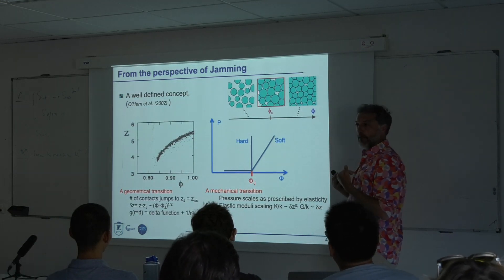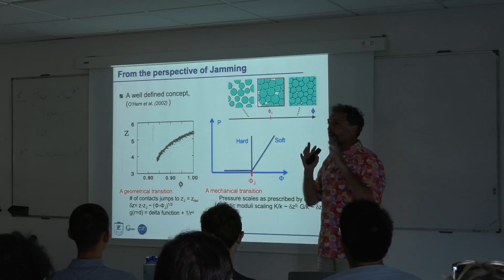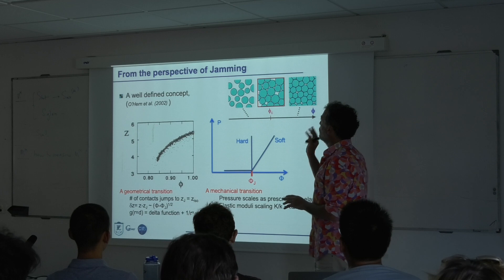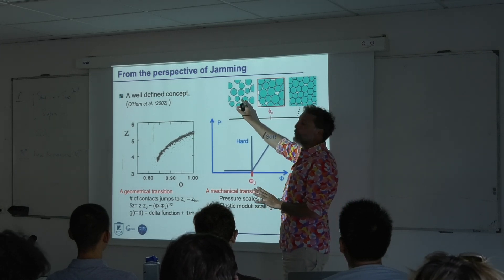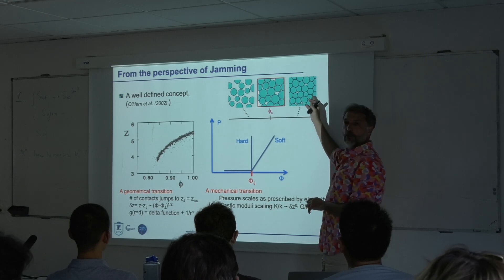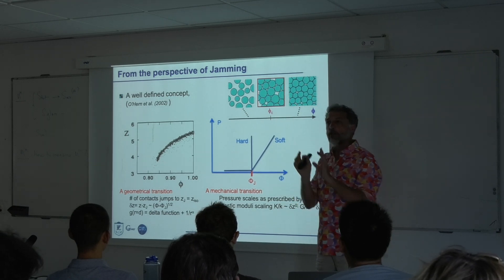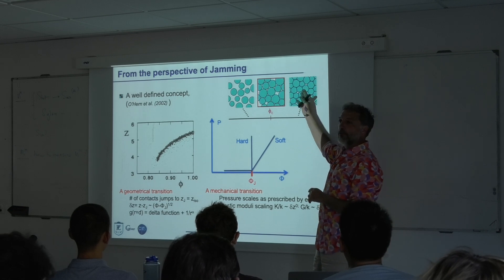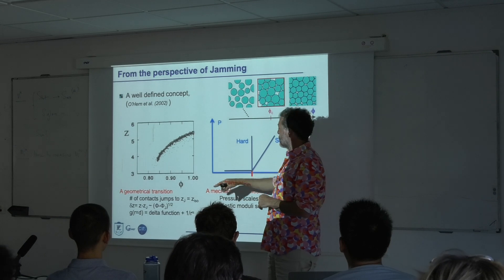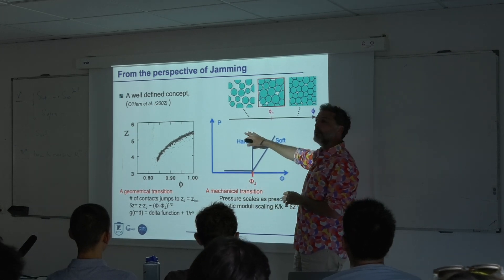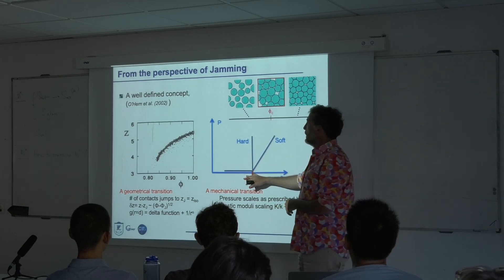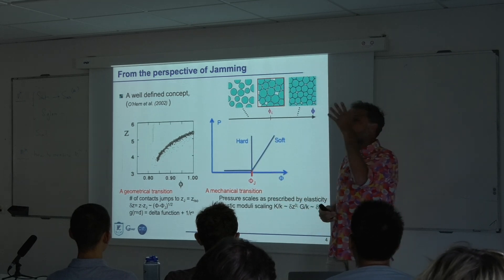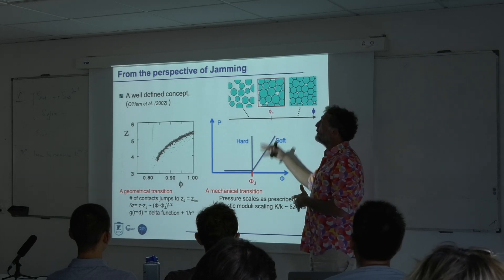From the point of view of jamming, it is a very well-defined concept. You consider a packing of spheres at zero temperature, no dynamics, and you wonder whether you can pack them or not given the packing fraction. At loose packing fraction there is no cost for overlapping particles. At high packing fraction there is a cost for overlapping. There is a packing fraction where you are just on the verge between these two regimes — this is jamming. You can do this with hard spheres, where mechanical pressure is zero before jamming and infinite at the transition, or with soft spheres where the pressure increases depending on the potential.